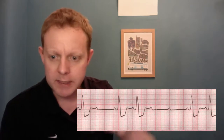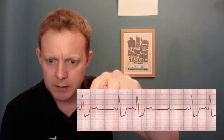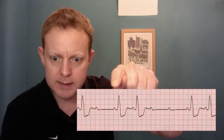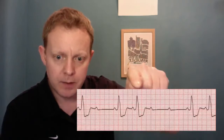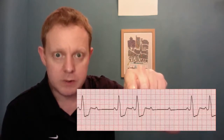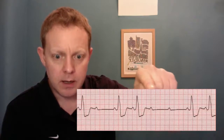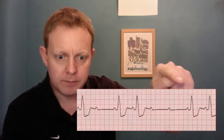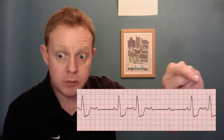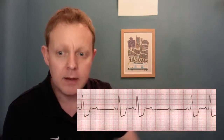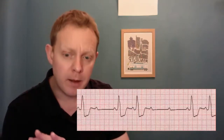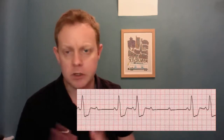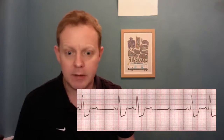Is there any atrial activity? Yes. I can see a P wave here, but I can't see a QRS complex after it. Then I see a P wave and a QRS complex with a normal PR interval. P wave, QRS complex, normal PR interval. P wave, nothing. P wave, nothing. P wave, QRS complex, normal PR interval. So we've got P waves followed by QRS complexes with a fixed normal PR interval — it doesn't seem to progressively lengthen.